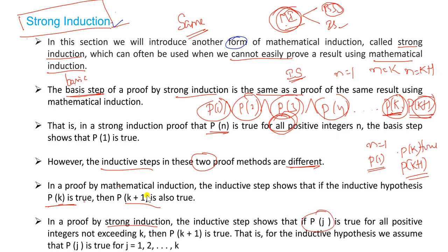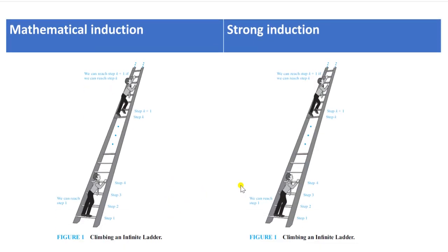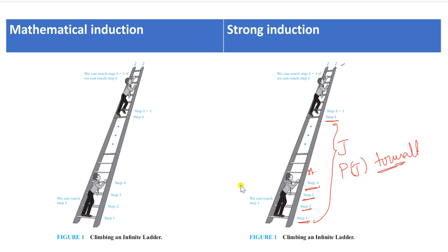In Strong Induction, let us say J represents all values before K. We assume P(J) is true for all those values. In Mathematical Induction, only Step 1 is proven, and then we directly assume Step K and prove K+1 is true. But in Strong Induction, we assume all values from Step 1 up to Step K are true, and then prove P(K+1) is true.